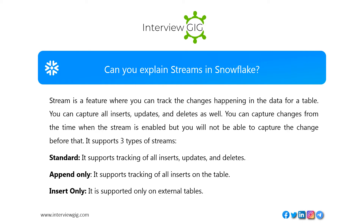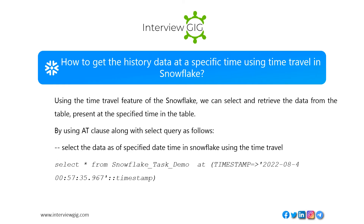Can you explain streams in Snowflake? A stream is a feature where you can track the changes happening in the data for a table. You can capture all inserts, updates, and deletes. You can capture changes from the time when the stream is enabled, but you will not be able to capture changes before that. It supports three types of streams: Standard — tracks all inserts, updates, and deletes; Append Only — tracks only inserts on the table; Insert Only — supported only on external tables.